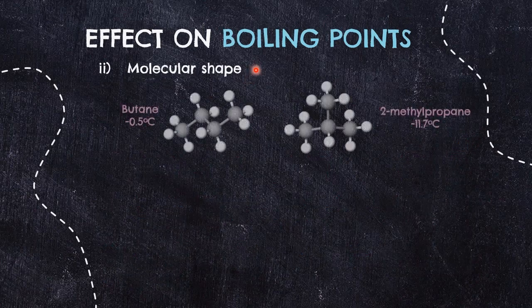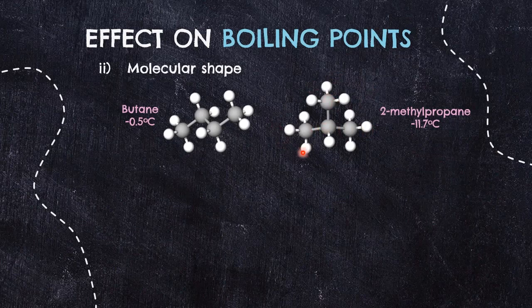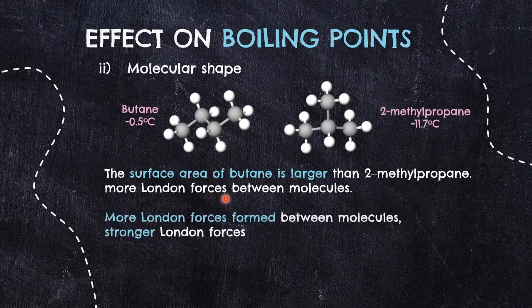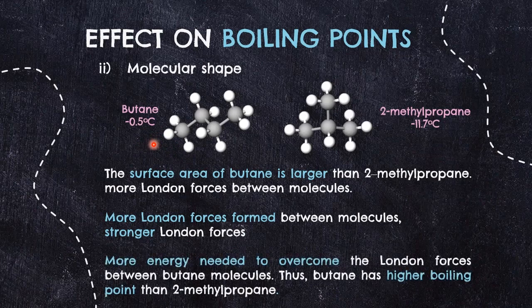In terms of molecular shape, both butane and 2-methylpropane are non-polar molecules with exactly the same molecular size — four carbons and ten hydrogens. Butane with a straight chain has a higher boiling point than 2-methylpropane, which has a branch at carbon number 2 on its parent chain of propane. The presence of a branch on 2-methylpropane results in a smaller surface area than butane. Butane's larger surface area means more London forces can be formed, increasing their strength and resulting in a higher boiling point of −0.5°C, requiring more energy to break the forces.